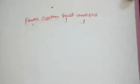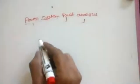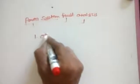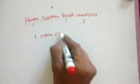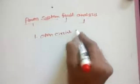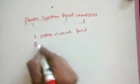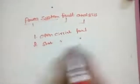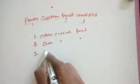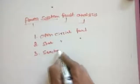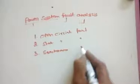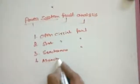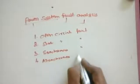Next, we will see what types of faults occur in a power system. The first type is open circuit fault. The second is short circuit fault. The third is synchronous fault. The fourth is asynchronous fault.